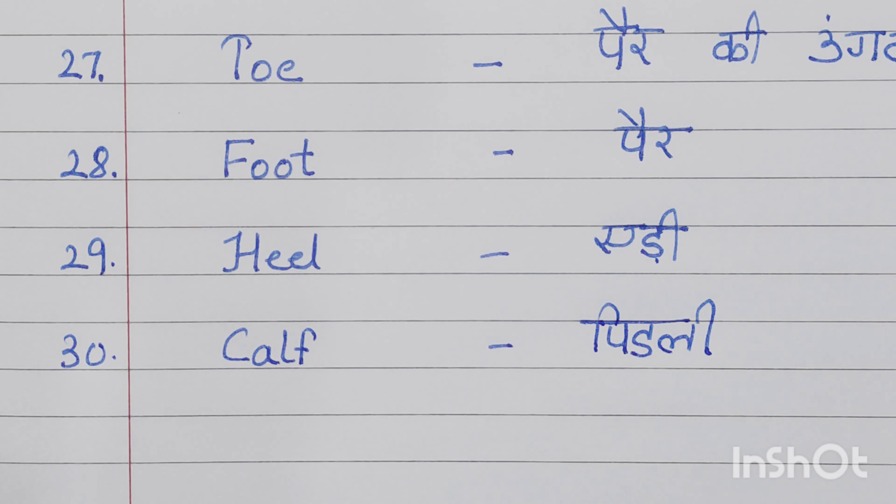Then twenty-sixth number is leg, L-E-G, leg means pair. Twenty-seventh number is our toe, T-O-E, toe. We use toe for the fingers of the feet. Toe means pair ki ungli.